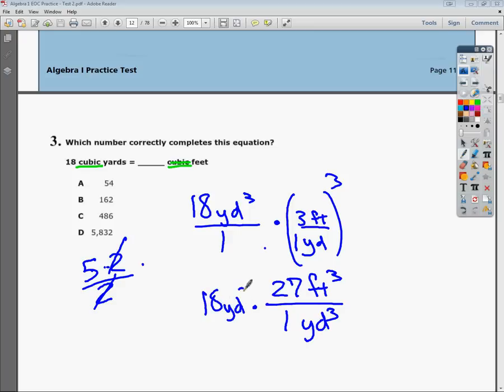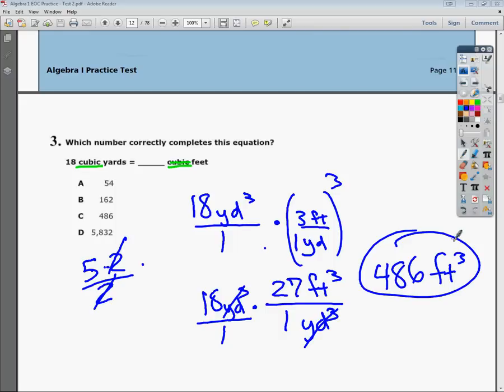Set up my original yards over one thing here. The yards will cancel, and then I just do the multiplying. 27 times 18 gives me 486. The only units that are left are feet cubed. So I can say solidly that 18 cubic yards is the same as 486 feet to the third power.